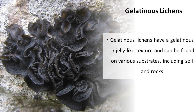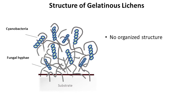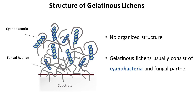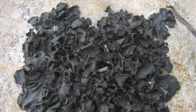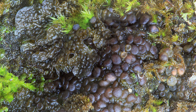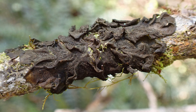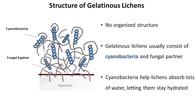Gelatinous lichens have a gelatinous or jelly-like texture and can be found on various substrates including soil and rocks. These lichens don't have an organized structure, very similar to leprose lichens. But unlike leprose lichens, which combine a mycobiont and mostly algal cells as photobiont, gelatinous lichens usually consist of cyanobacteria and a fungal partner. Cyanobacteria give the lichen dark green, brown, or black colors. Gelatinous lichens are common in places with irregular rainfall or occasional flooding, like rock pools. Cyanobacteria help the lichen body absorb lots of water, letting lichens stay hydrated and continue photosynthesis long after the wet period ends.